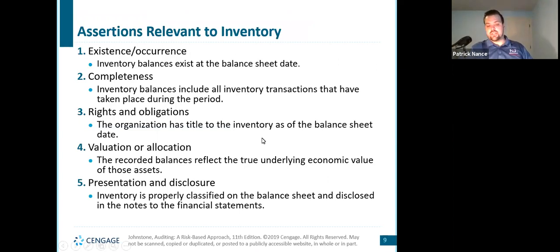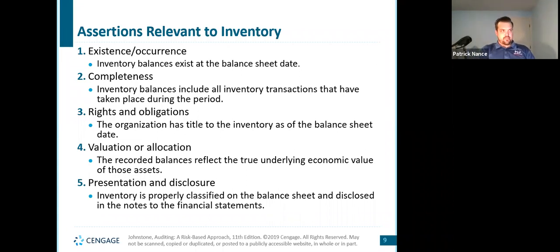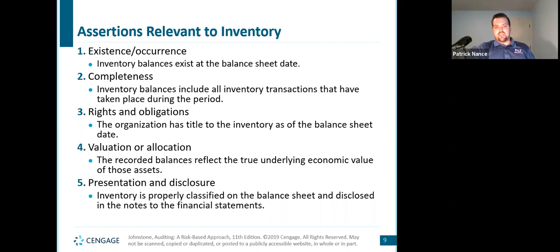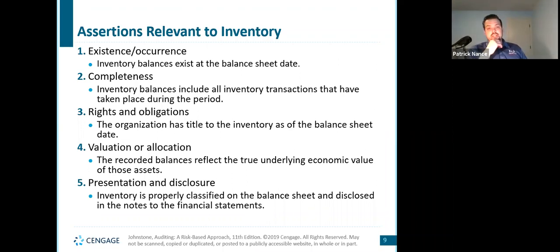Assertions — this happens in pretty much every chapter. We have our five assertions and we're talking about specifically how these apply to inventory. Existence and occurrence: inventory balances exist at the balance sheet date — they are real, they existed, and we have purchased them. Completeness: inventory balances include all inventory transactions that took place during the period, so we're not missing anything. This would include things in shipment depending on whether it's FOB destination or FOB shipping point — making sure we're complete with regard to that.